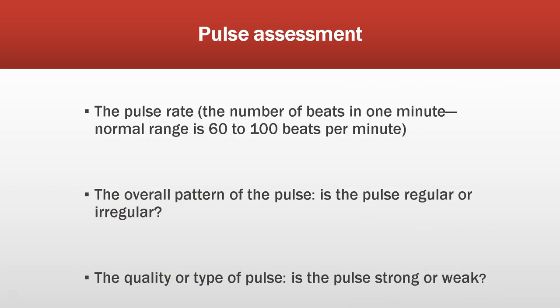Pulse assessment measures both the number of beats and the quality. The normal pulse rate for an adult is 60 to 100 beats per minute. Count a full minute — do not take a pulse for half a minute and multiply by two. Factors that can affect pulse are age, medication, pain, and diseases. While counting beats, take notice of the pattern: is the pulse regular, or does it speed up, slow down, or pause? A pulse that is irregular, strong, or weak is important to note.